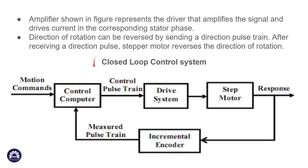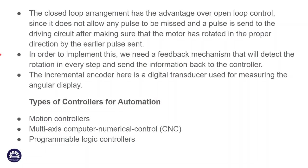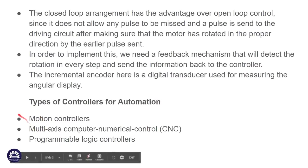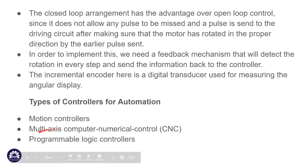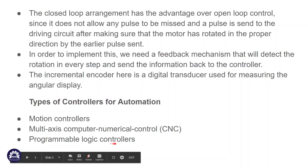These are the two types of control systems. The difference between open loop and closed loop includes advantages and disadvantages. The types of controllers for automation include motion controllers, multi-axis, computer numerical control (CNC), and programmable logic controllers (PLC).